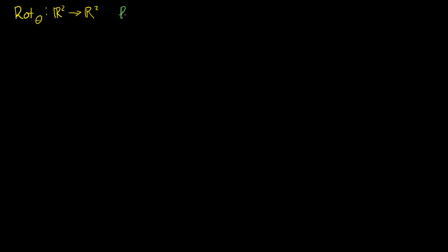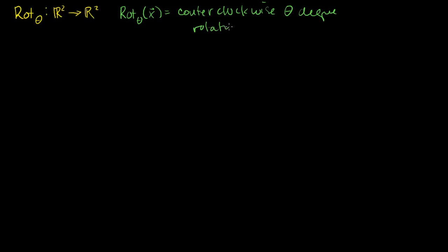Let's see if we can create a linear transformation that is a rotation transformation through some angle theta. What it does is it takes any vector in R2 and maps it to a rotated version of that vector. The rotation of some vector x is going to be equal to a counterclockwise theta degree rotation of x. This is what we want to construct using our new linear transformation tools.